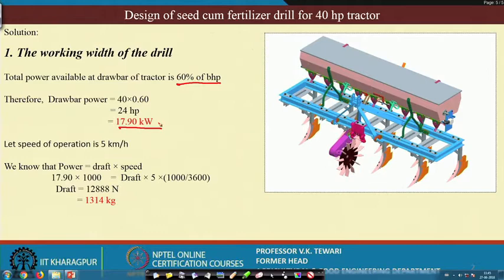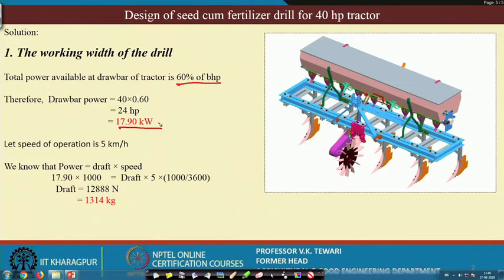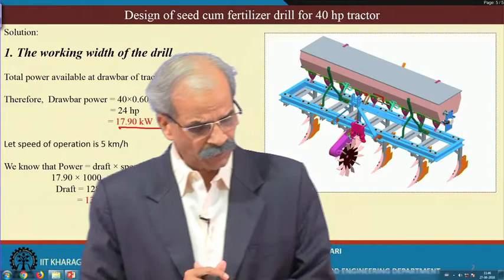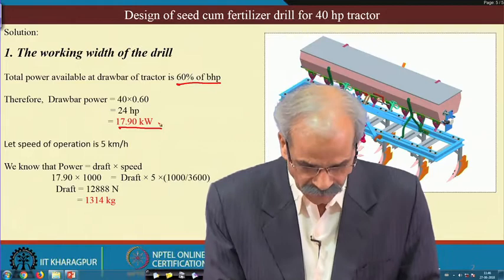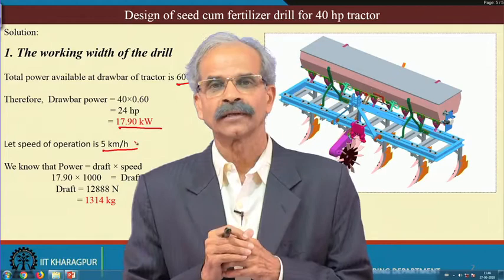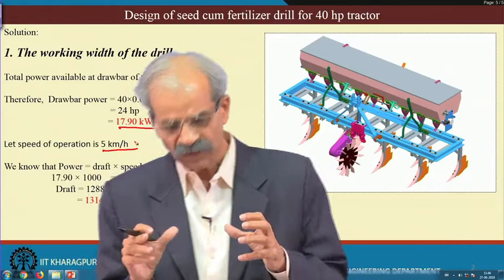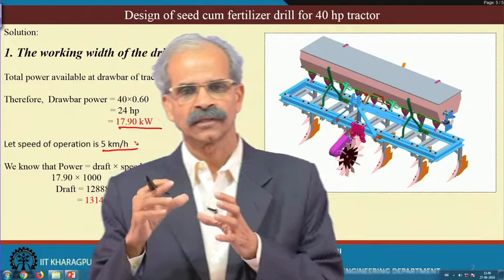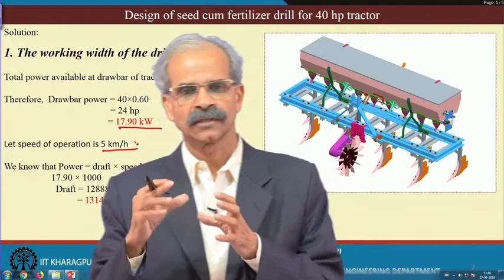Now let us find the speed of operation, which is also an important design consideration. From literature, seeding speed varies between 4 to 6 km/h depending on the seed type, soil conditions, and machine size. We have taken 5 km/h as the operating speed. Although the implement is connected via a 3-point linkage, we will find the total draft available based on the power available and the speed, giving us a total draft of about 1314 kg.